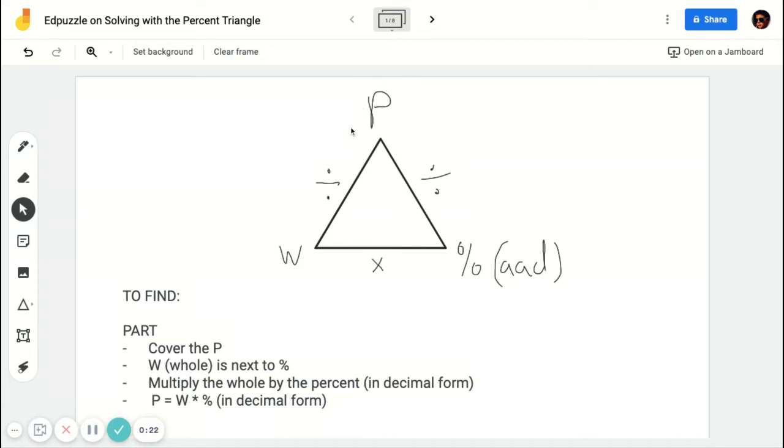So you place your part at the top, whole on the left, and then you write percent. And then just remember it's AAD, which stands for as a decimal. And then you have division between the part and the whole, division between the part and the percent as a decimal, and then multiplication between the whole and the percent as a decimal.